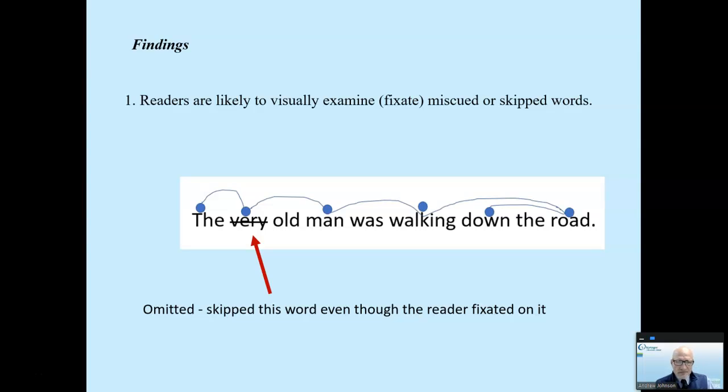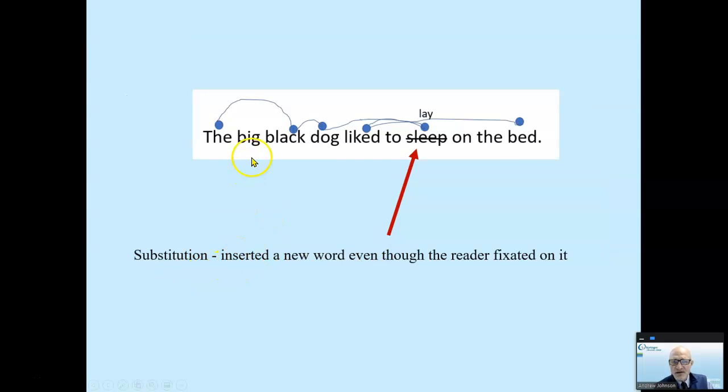Now, Paulson found some interesting stuff. He found that readers are likely to visually examine, to fixate miscued words. Even though they stopped and looked right at the word, or fixated for ample duration, they often omitted these words, or substituted these words, or changed these words. These omissions, substitutions, and changes were still meaning maintaining. That means the sentence still made sense. The old man was walking down the road. So omitted very, even though the reader fixated right on it, but it still made sense. Remember, we perceive only that which our eyeballs fixate on. Another example, a substitution. The big black dog liked to lay on the bed at sleep. The reader fixated right on there, but still said lay instead of sleep.